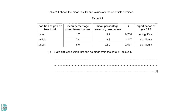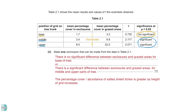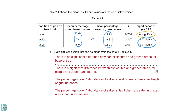Table 2.1 shows the results. State one conclusion that can be made from the data. The t-test results show that there is no significant difference between exclosures and grazed areas for the base of the tree; however, the difference is significant for the other two positions. Looking at the percentage cover of the three positions, the percentage cover or abundance of lichen is greater as the height of the grid increases. Comparing the two areas across all three positions, the percentage cover is greater in grazed areas than in exclosures.